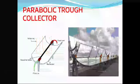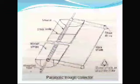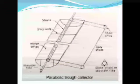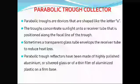The parabolic trough collector is a device shaped like the letter U. This is the cross-sectional area of a parabolic trough collector. The troughs concentrate sunlight onto a receiver tube that is positioned along the focal line of the trough.